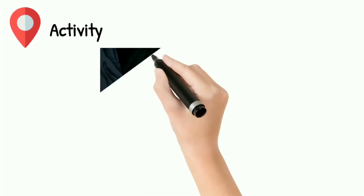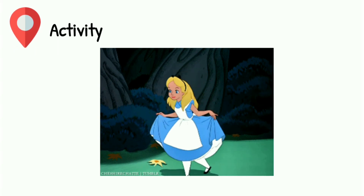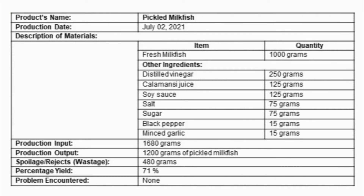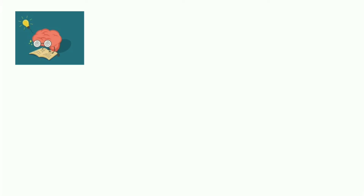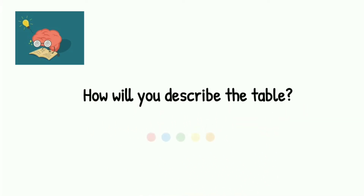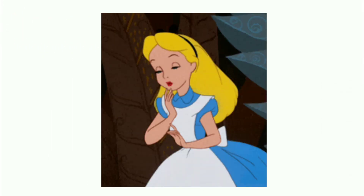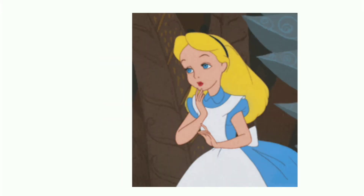I would like you to meet Alice. She's a 13-year-old Grade 8 student just like you. Her favorite subject is TLE. One day during their TLE class, her teacher showed them a table. Alice was asked to describe the table. She said the table represented data in tabular form. Her teacher said that the table is about a production report and has something to deal with calculating production input and output in fish processing. If you were Alice, how would you describe the table? The table sparked Alice's interest. She wants to learn more about calculating production input and output in fish processing. Their teacher gave them questions to be answered on their next class, and Alice has been bothered by their task in TLE.